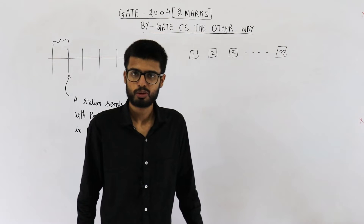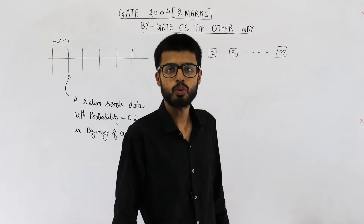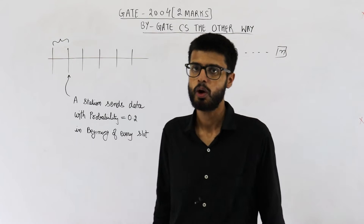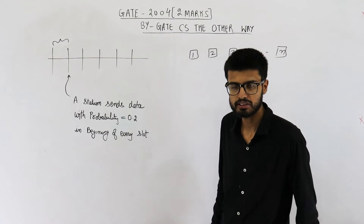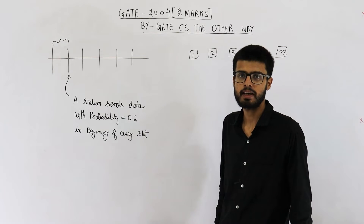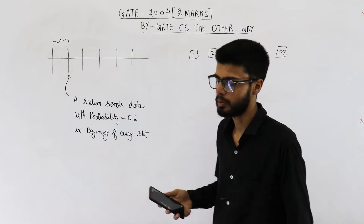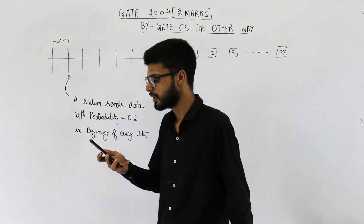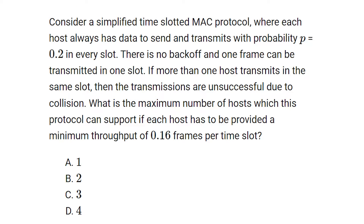Hello students, welcome back. This question is for two marks and is from the GATE exam of IT branch 2004. Consider a simplified time-slotted MAC protocol where each host always has data to send and transmits with probability p equal to 0.2 in every slot.